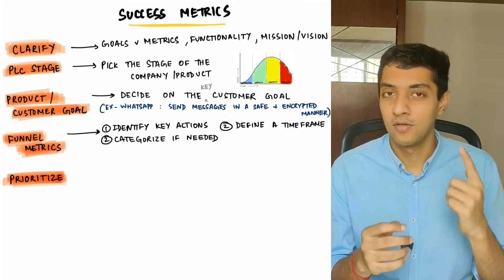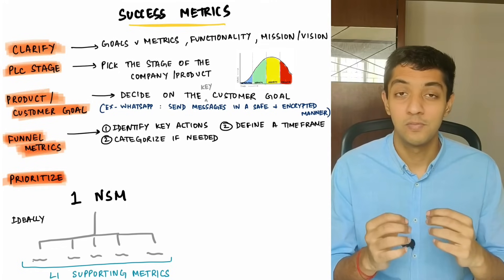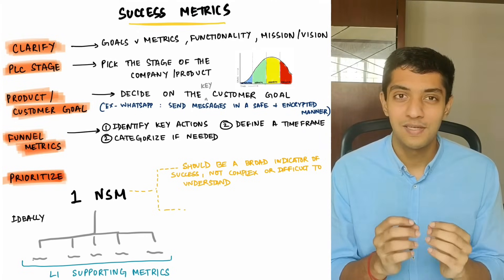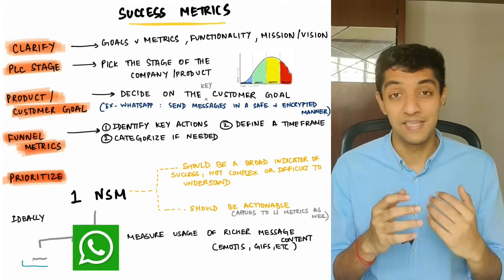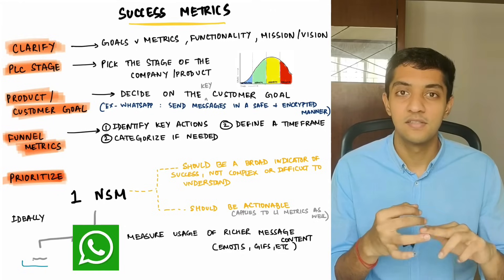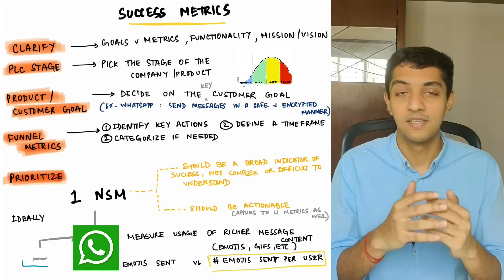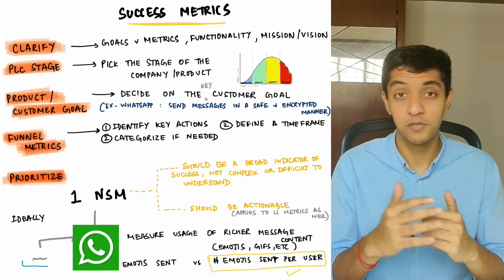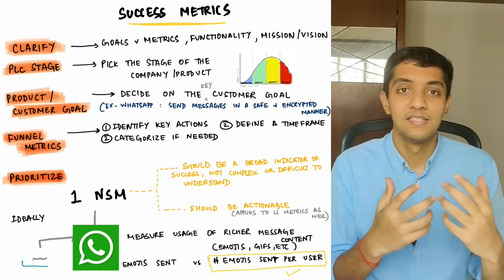The next step is to prioritize among the metrics you've chosen. Your goal is to have one North Star metric and four to five L1 supporting metrics. Your North Star should be a broad indicator of success and not something complex or difficult to measure or understand. Prioritize metrics you can actually take action on. For example, if you're WhatsApp optimizing for engagement, you'd want to measure how well users are using richer forms of messaging like GIFs, stickers, and emojis — specifically, the total number of emojis, GIFs, and stickers sent per user in a given time period. Adding 'per user' makes the metric more actionable and informative.